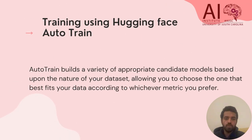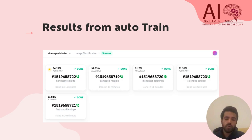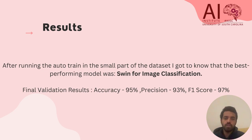To choose from the pool of models available, I came to know about AutoTrain, which depending on your dataset chooses from a variety of models and suggests the best possible model for your given dataset. After running AutoTrain on a small part of the dataset, the best performing model was Swin for image classification. The final validation results were: accuracy of 95%, precision of 93%, and F1 score of 97%.